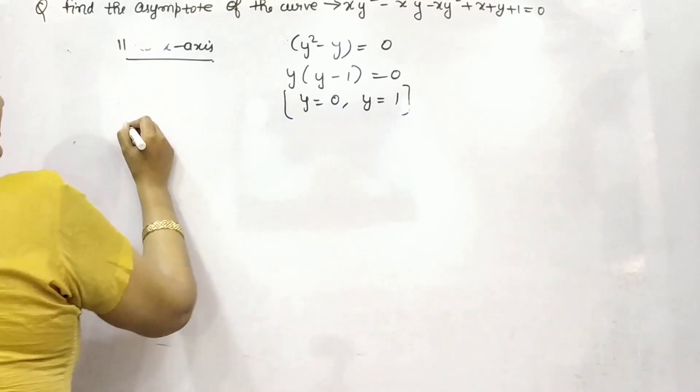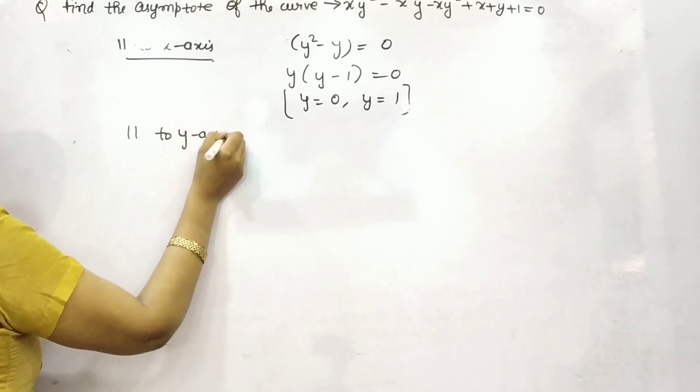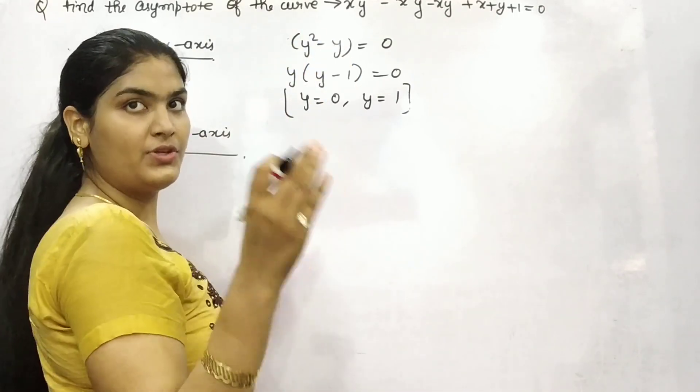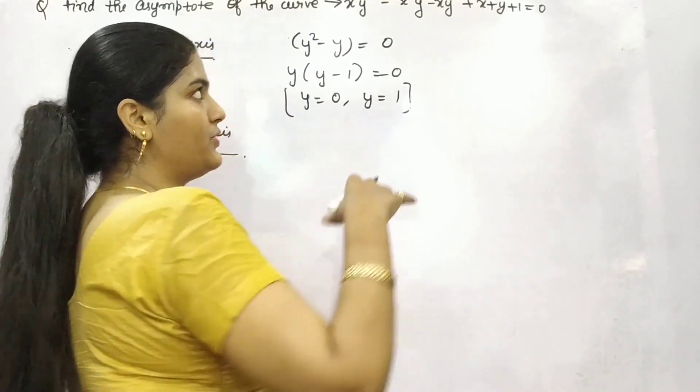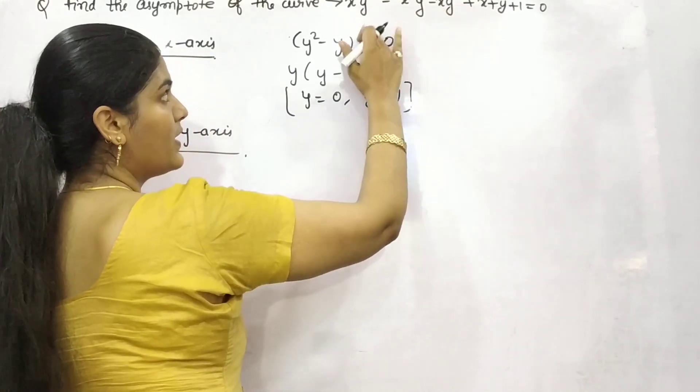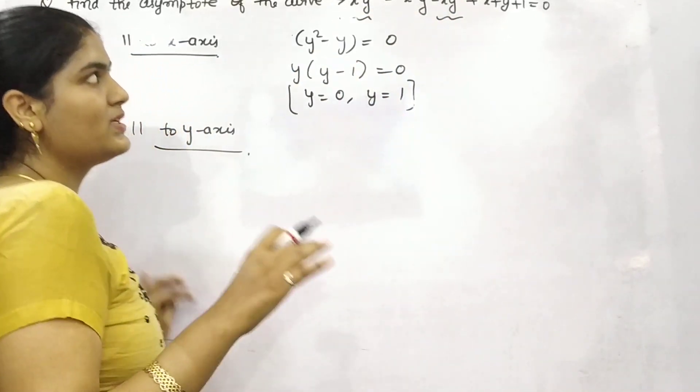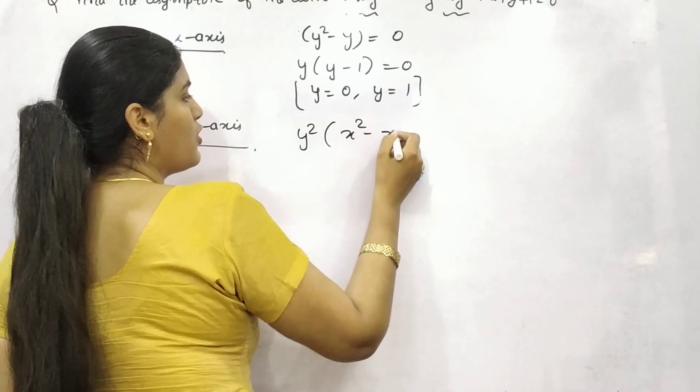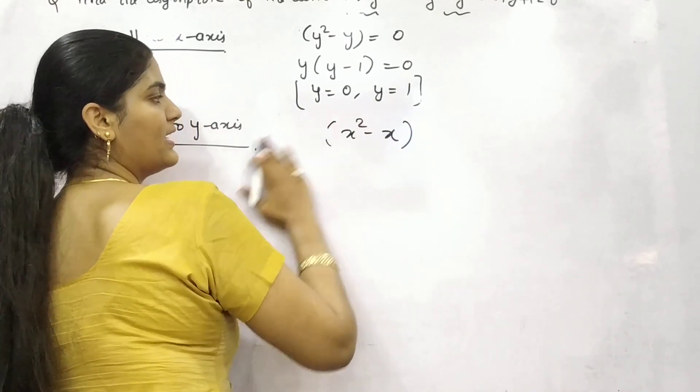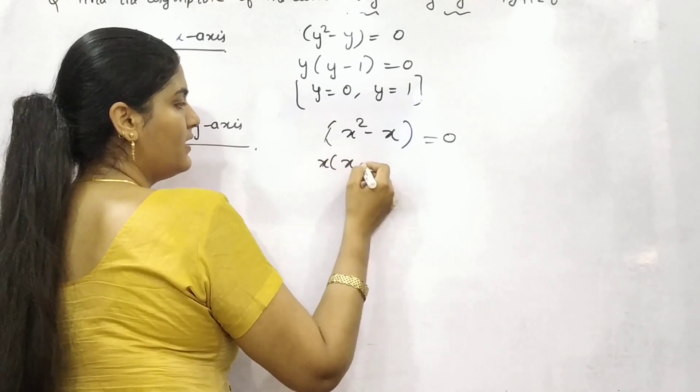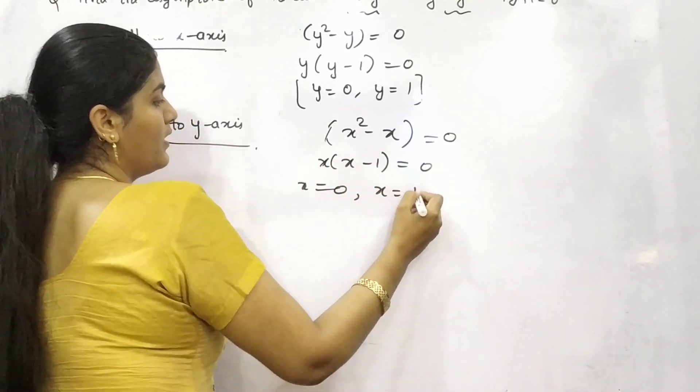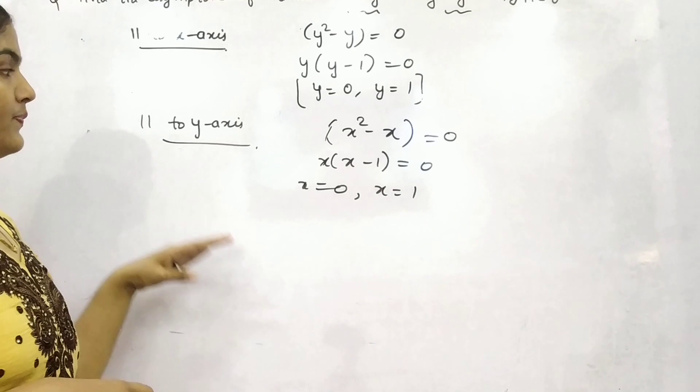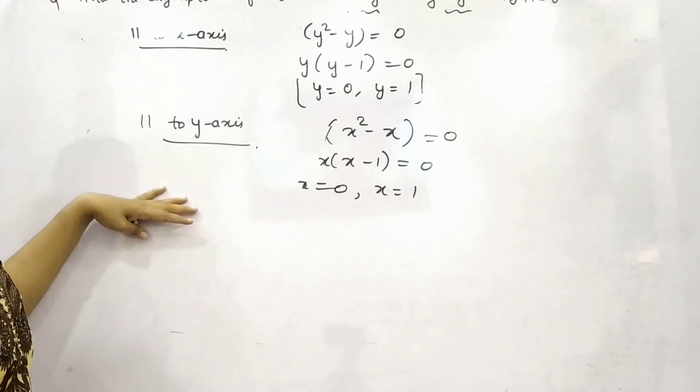Thereafter, to check at which point asymptote will be parallel to y-axis, take the highest power of y and its coefficient. The highest power of y is y square again. These two terms have the highest power of y. Take highest power common, so your coefficient is x square minus x. Put it as 0. Now you have got your points where the asymptote intersects at the x-axis. In this way, you can find the asymptote.